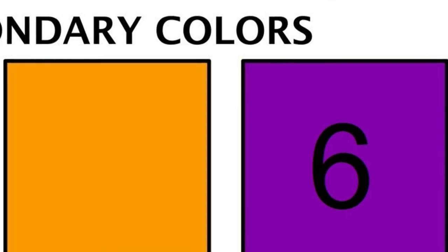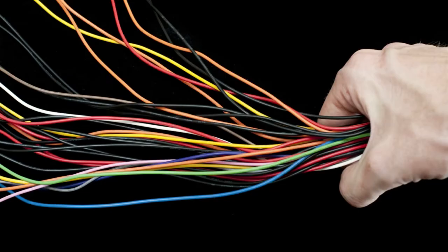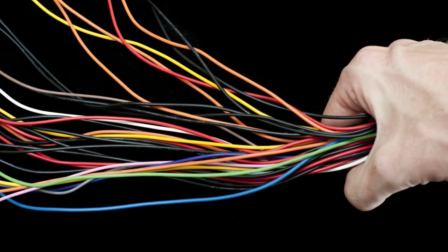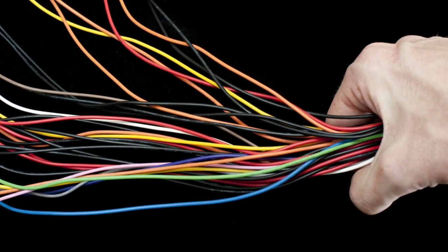Now it gets a little bit tricky. Seven will be represented by pink or dark pink. Eight by silver or gray. And of course, gold follows silver, so number nine is gold or a brownish gold.